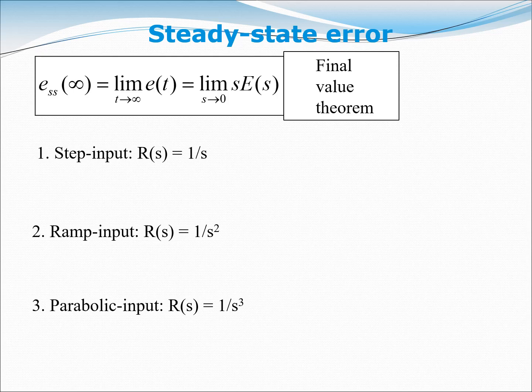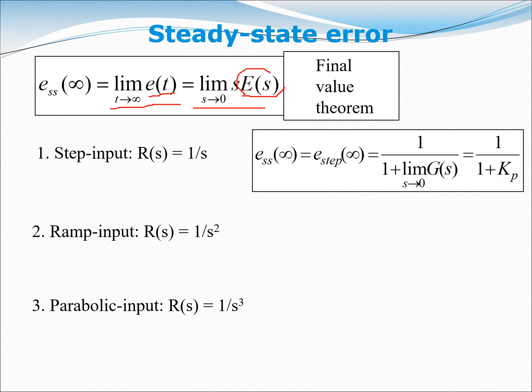To find the steady state error, we use the formula: e_ss equals the limit as t goes to infinity of e(t). Converting to the Laplace domain using the final value theorem, this becomes the limit as s goes to zero of s·E(s). We then evaluate this for all three types of inputs.